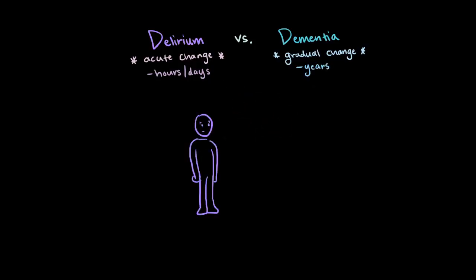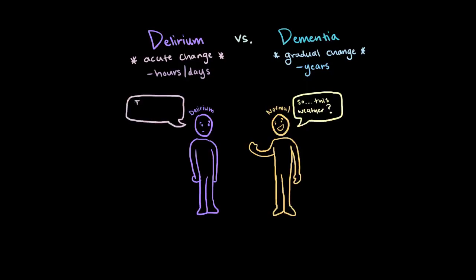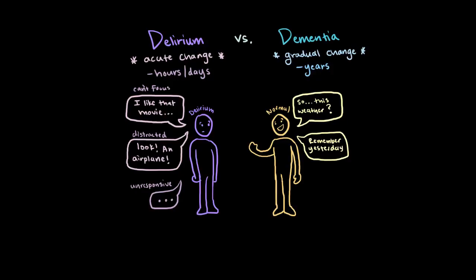Patients with delirium often have this decreased awareness of their environment and become very confused. So if you're having a conversation with them, they might not be able to stay focused on one particular topic and they might wander or be easily distracted by something else, or they may simply not respond to the environment at all. They may also have this poor ability to remember things, especially with respect to recent events.